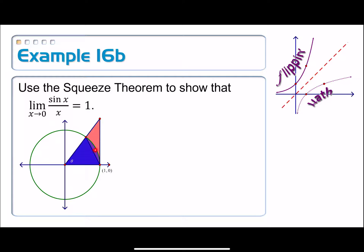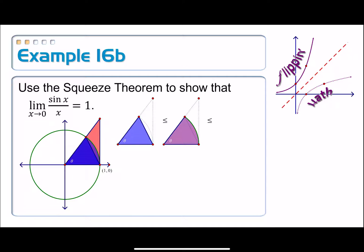Notice there are three geometric shapes overlapping here: a triangle on the inside, a sector — like a pie slice — and then a larger right triangle that encompasses all of those. We can say the inner triangle's area must be less than or equal to the sector's area, since there's an extra piece of pie crust that the triangle is missing. And both must be less than or equal to the large red right triangle.